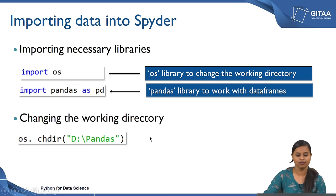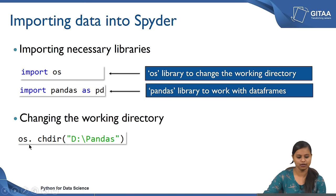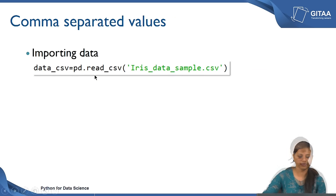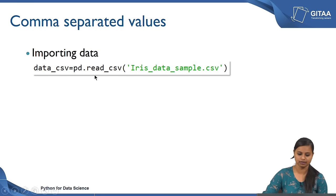Next we have imported the OS library. Using the OS library and the dot operator, I am using the function called 'chdir', which stands for changing directory. Inside the function you just need to give the path of your file wherever it is lying on your drive or in your system. Now let us see how to read a CSV file into Spyder.